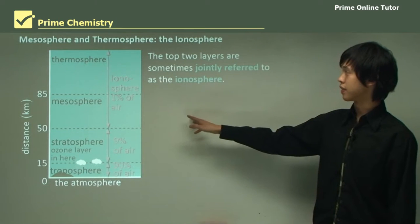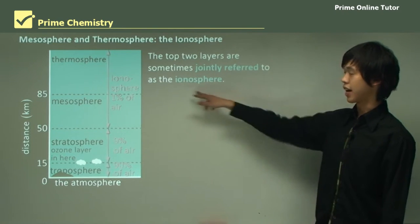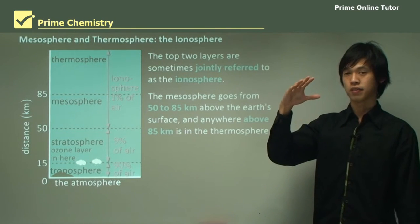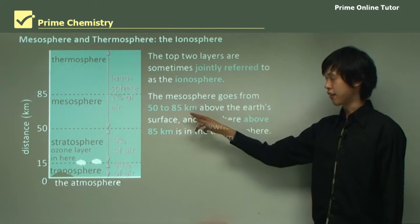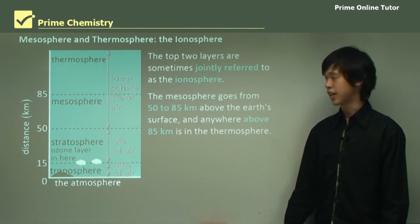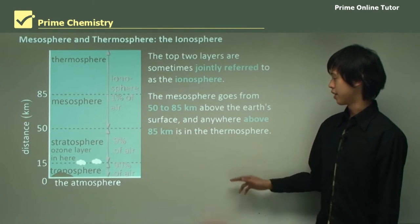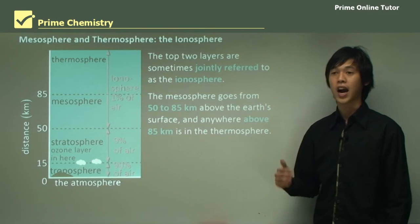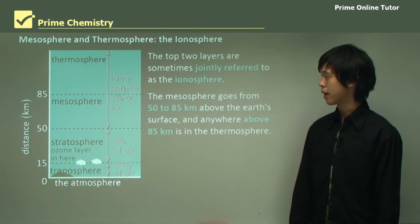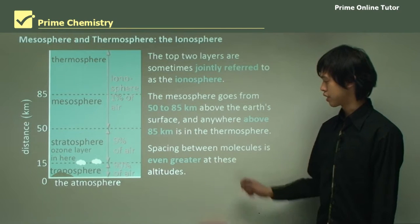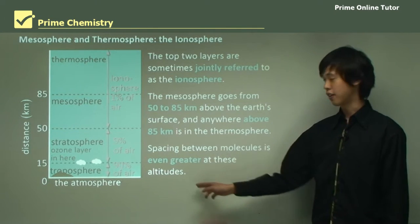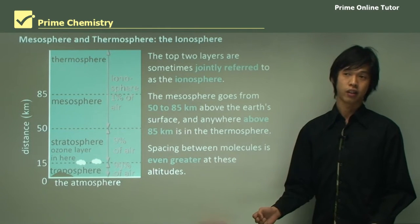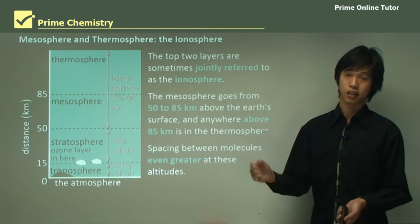The mesosphere and the thermosphere, jointly referred to as the ionosphere, are the top two layers of the atmosphere. The mesosphere spans from 50 to 85 kilometers above the Earth's surface, and the thermosphere starts from anywhere above 85 kilometers. It is a very high altitude area that possesses very little air, with very large spacing between molecules — essentially free particles flying around with almost nothing between them.